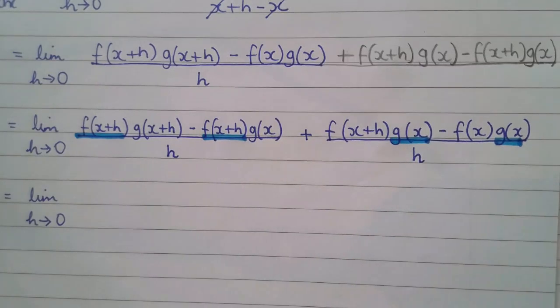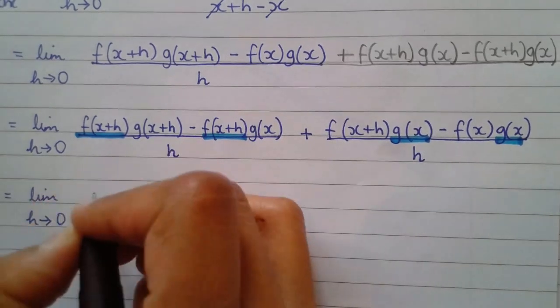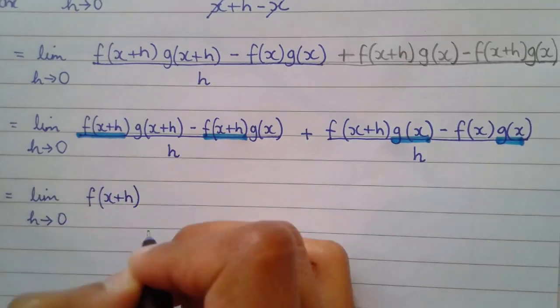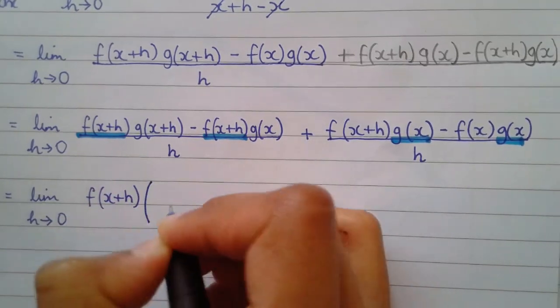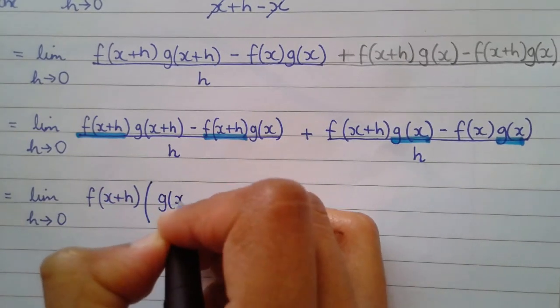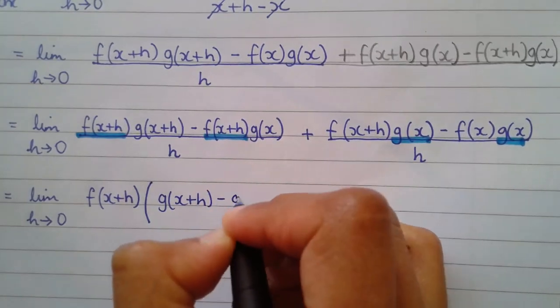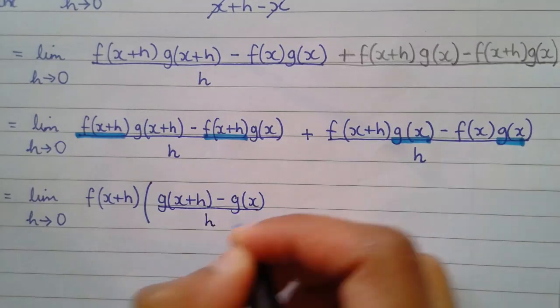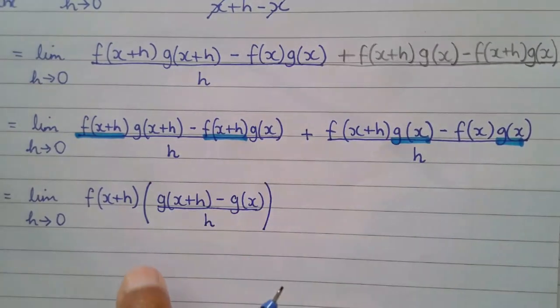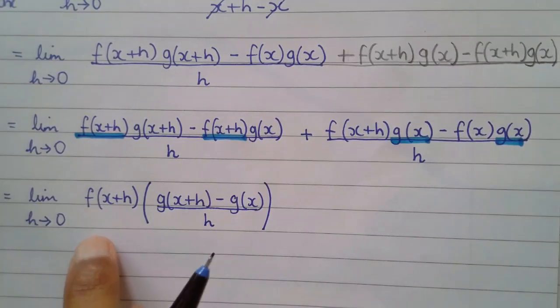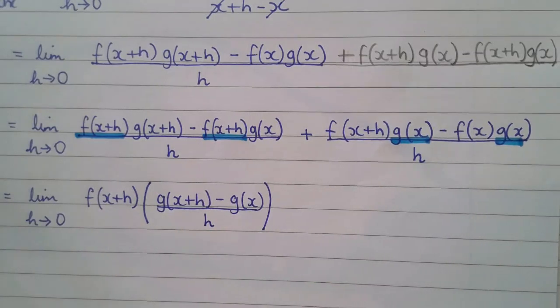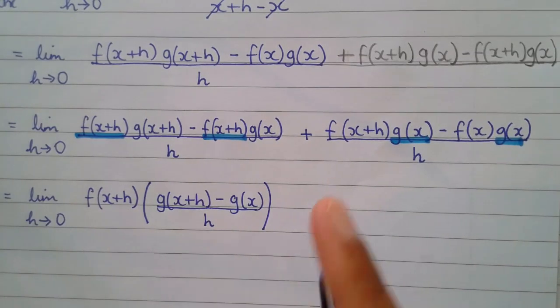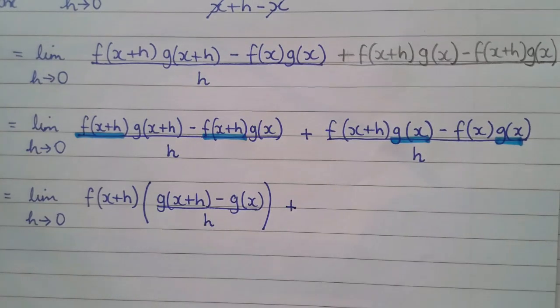So I can now say f of x plus h, and open up my bracket, g of x plus h minus g of x, and the denominator h can stay here. I could have just left all over h, but there's a reason why I've written it like that, and you'll know mathematically it means the same thing. Plus, here I'll take out the g of x, and I do the same thing.